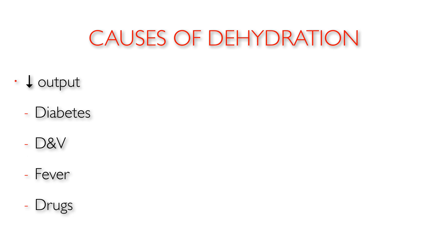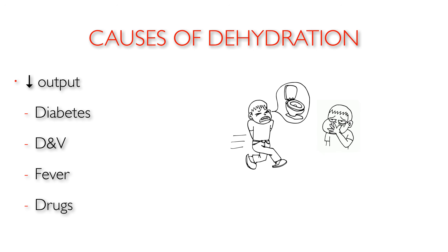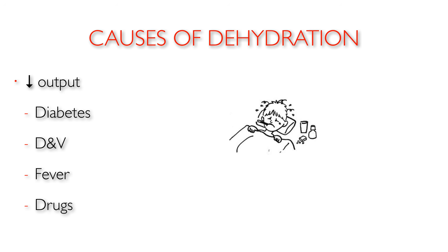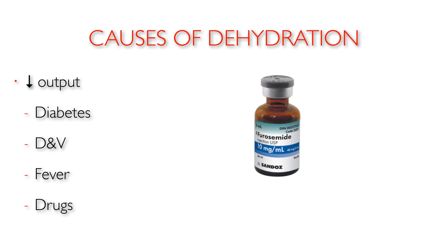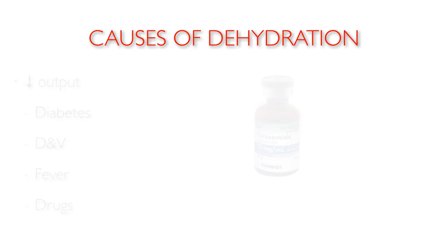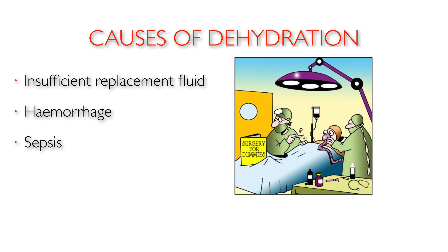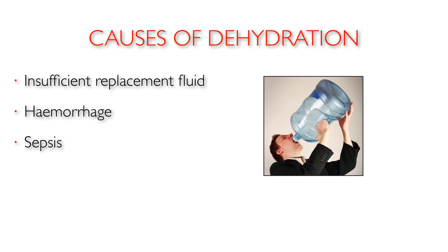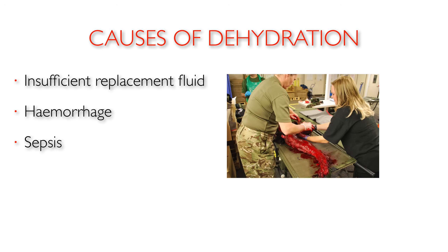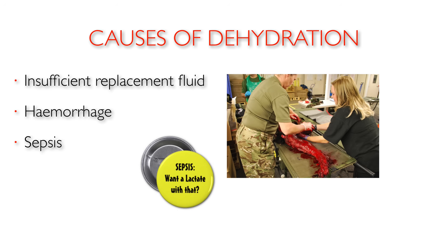Excessive output compared to input can occur with illness such as diabetes, diarrhoea and vomiting, excessive sweating due to fever, or drugs such as diuretics. Other causes can be insufficient fluid replacement during surgery and an insufficient IV regime. Major haemorrhage and sepsis are also causes, but they're beyond the scope of this talk.